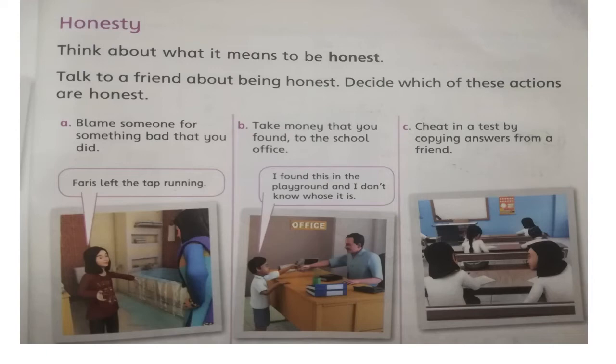Here are some examples in your textbook. The first example is: blame someone for something bad that you did. In this picture, she is saying on asking, 'Ferris left the tap running.' What do you think — is it an honest act or a dishonest act? You can write honest or dishonest on these pictures.